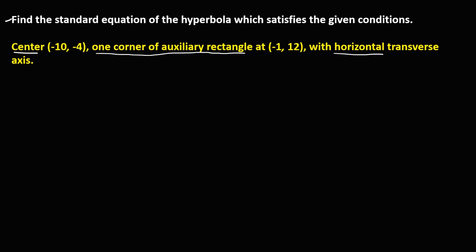Since the transverse axis is horizontal, this hyperbola is a horizontal hyperbola. The standard equation for the horizontal hyperbola is x squared over a squared minus y squared over b squared equals 1.